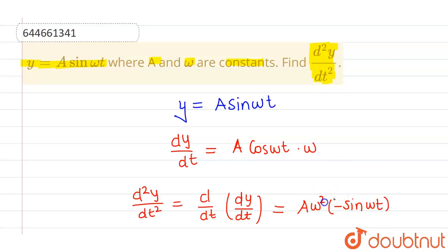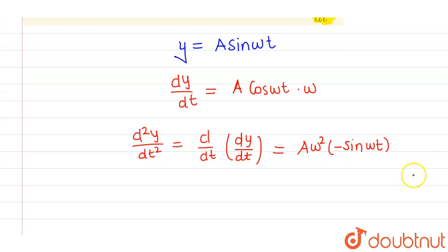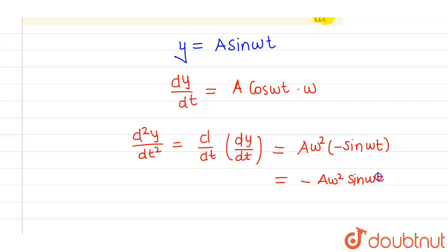Squaring omega, d²y over dt² can be written as minus a·omega squared·sine omega t. This is our answer.